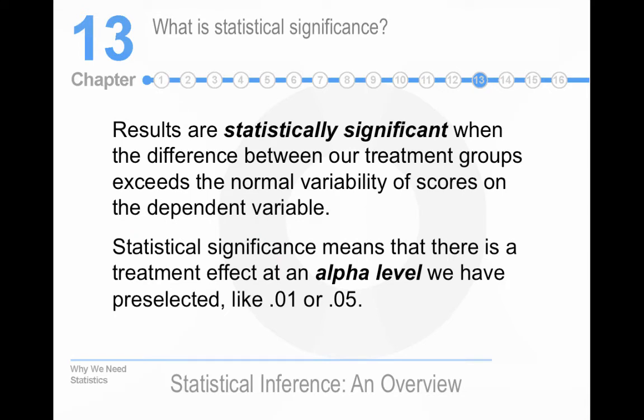So, what is statistical significance? The difference between our treatment groups exceeds the normal variability of scores on the dependent variable. So, the means between the two groups are so different given the variability in the samples.